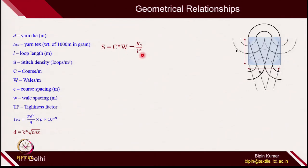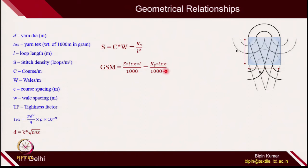Using these relations, other variables can also be found. Stitch density S = Ks/L². For GSM, from the last class we derived: GSM = S × Tex × L / 1000. Substituting S = Ks/L² gives GSM = Ks × Tex / (1000 × L). So GSM is also dependent only on loop length. Although GSM is directly proportional to L in that form, in reality GSM is inversely proportional to loop length — when you increase loop length, the GSM of the fabric goes down.